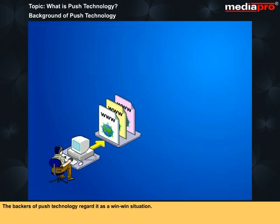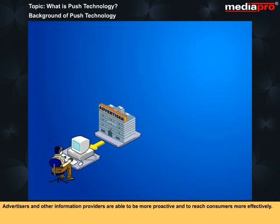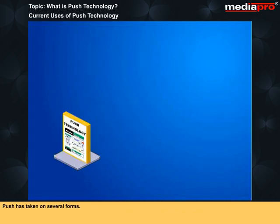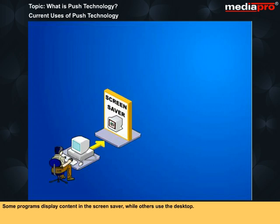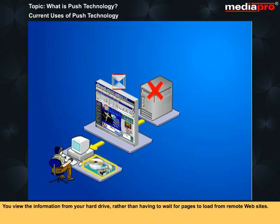The backers of push technology regard it as a win-win situation. Consumers are given the luxury of not having to always go looking for information, and the information is stored for offline browsing. Advertisers and other information providers are able to be more proactive and reach consumers more effectively. Push has taken on several forms — some programs display content in the screensaver, while others use the desktop. These programs allow you to subscribe to content and specify when you want it updated. The program gathers information from selected categories and delivers it to your computer at your established intervals, so you view it from your hard drive rather than waiting for pages to load from remote websites.